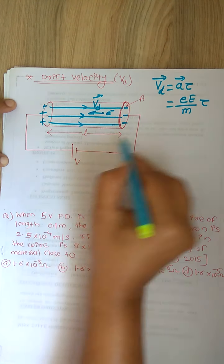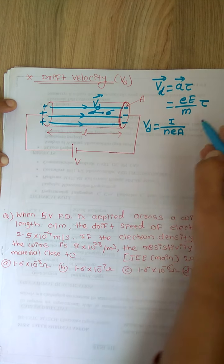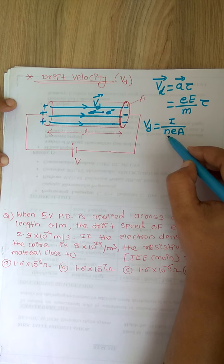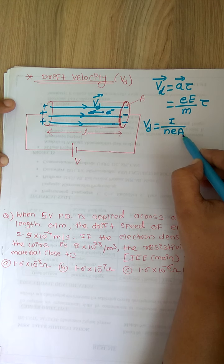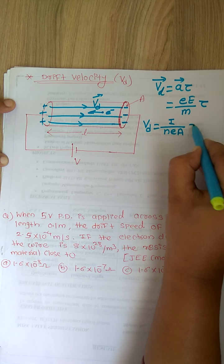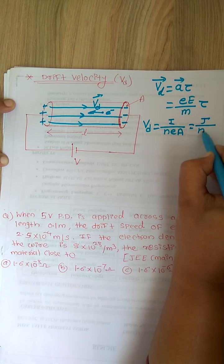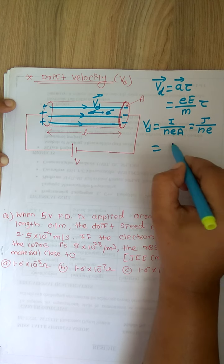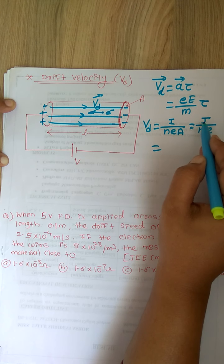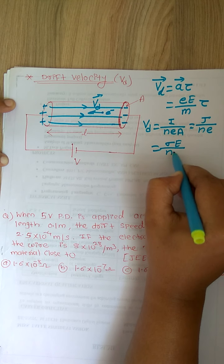Another form: drift velocity is current divided by nEA, where n is the number of electrons per unit volume (per meter cubed), e is the charge on the electron, and A is the area of cross section. Since current divided by area is current density J, drift velocity is also J divided by ne, where current density J equals sigma times E divided by ne.